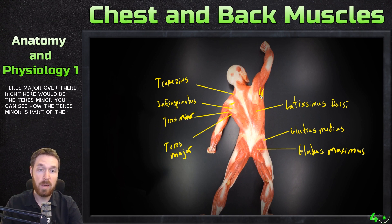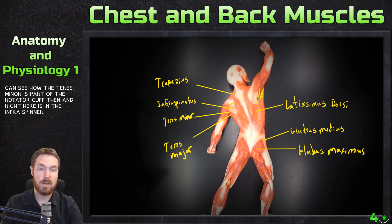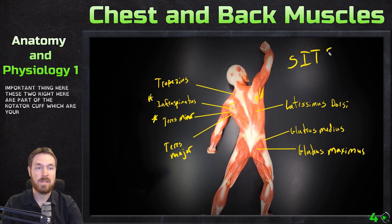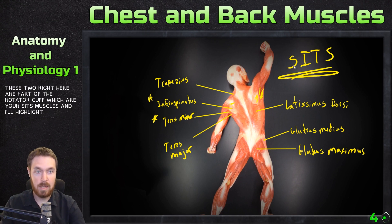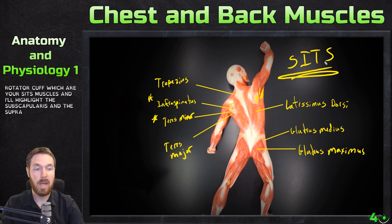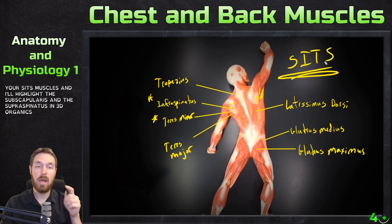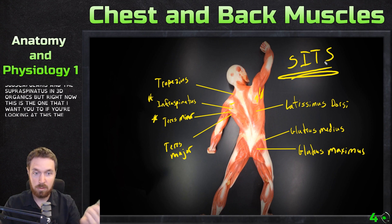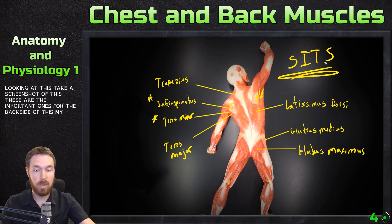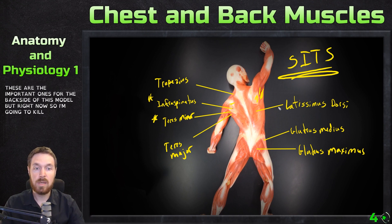The teres minor and infraspinatus are part of the rotator cuff — your SITS muscles. I'll highlight the subscapularis and supraspinatus in 3D Organon. Right now, if you're looking at this, take a screenshot — these are the important ones for the back side of this model. Now I'm going to clear this and move to 3D Organon to show these a little better.